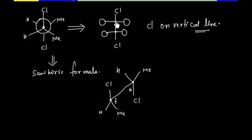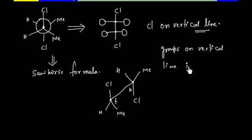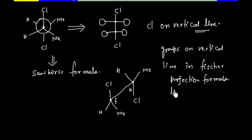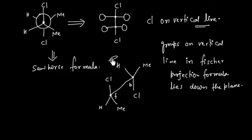Now we need the chlorines on the vertical line for the Fischer projection formula. In Fischer projection formula, anything on the vertical line lies down to the plane. So groups on the vertical line in Fischer projection formula lie down to the plane.